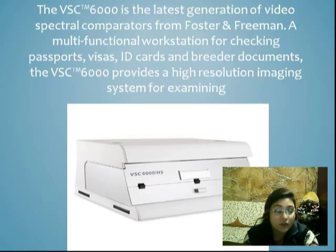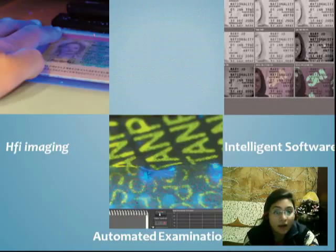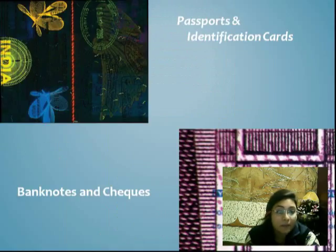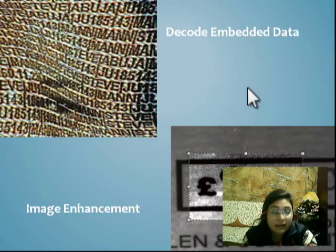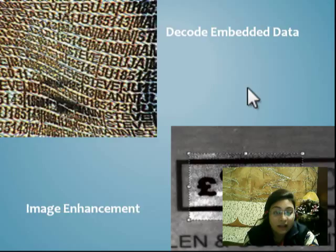VHC is used in various ways. Some examples are: archive imaging, automated examination, intelligence software, passport and identification cards, banknotes and checks, decoded emitted data, and image enhancement. It is a non-destructive technique, which is a benefit — it can be used to reveal ink alterations and security features in checks, documents, or banknotes.